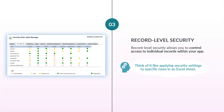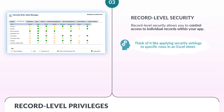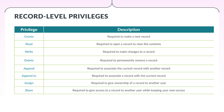Record-level security allows you to control access to individual records within your apps. Think of it like applying security settings to specific rows in an Excel sheet. This type of security includes eight access types that define what actions users can perform on these records. Let's explore these access types in detail.